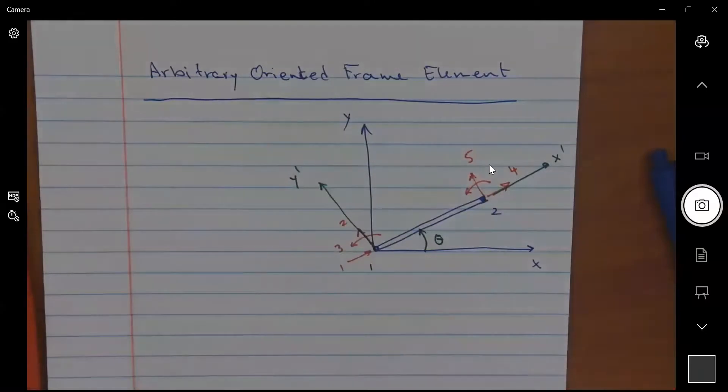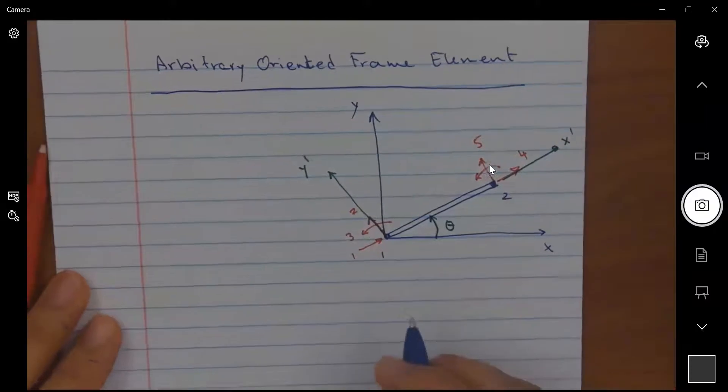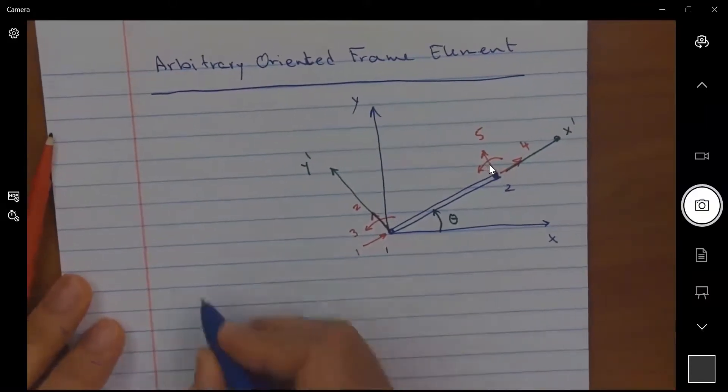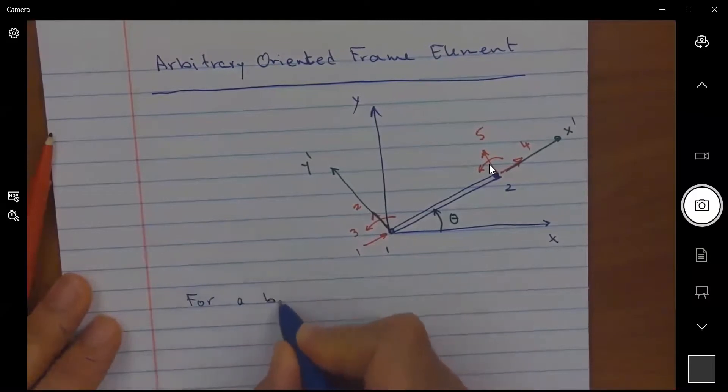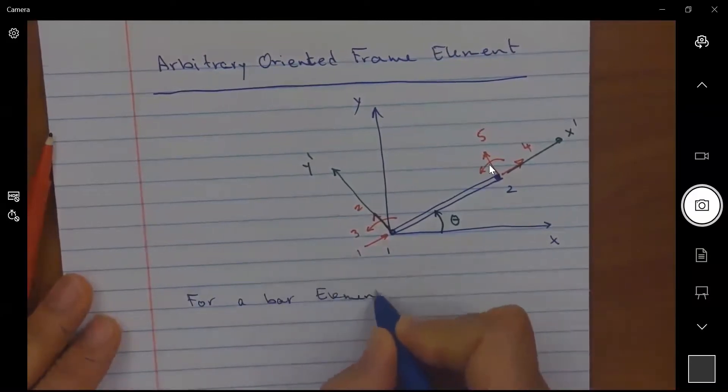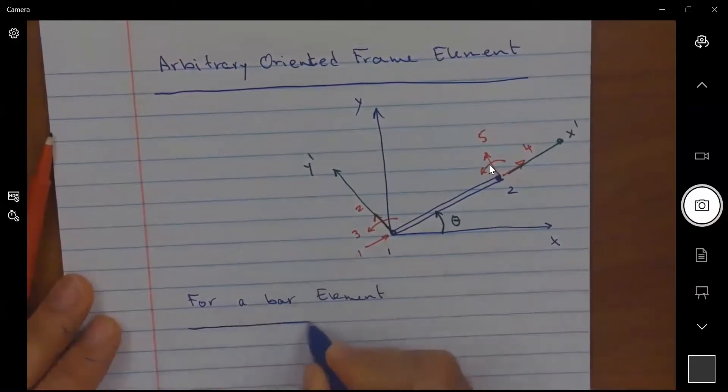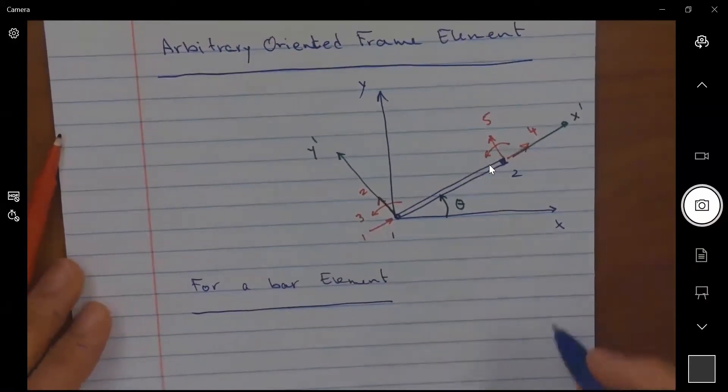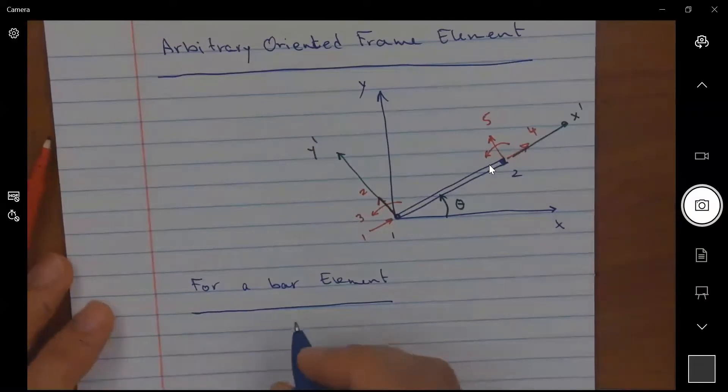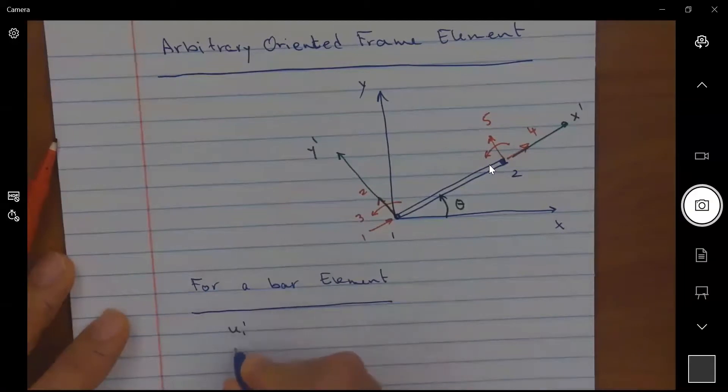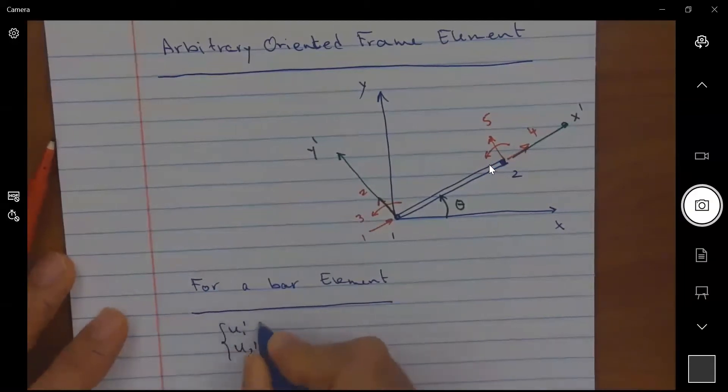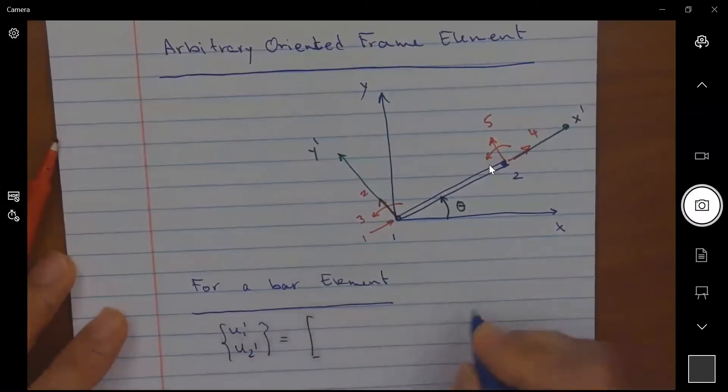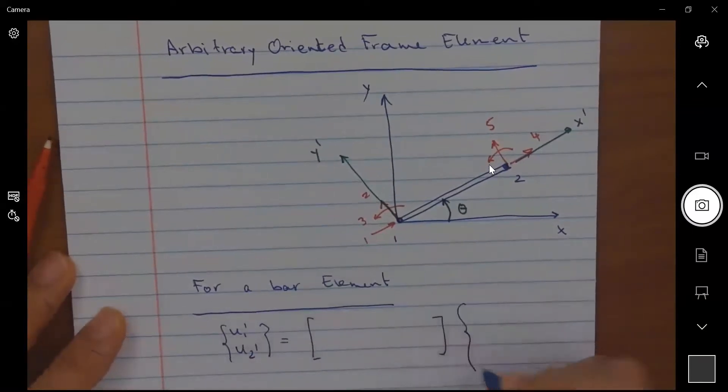These are all, the reds here are all local. So I want to remind you that for a bar element that was arbitrary oriented, we were able to say that u1 prime, u2 prime were equal to u1, v1, u2, and v2.